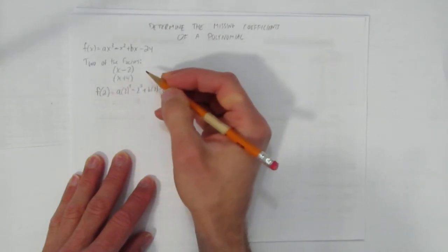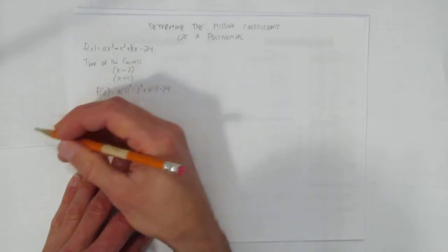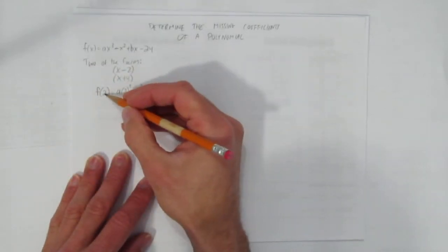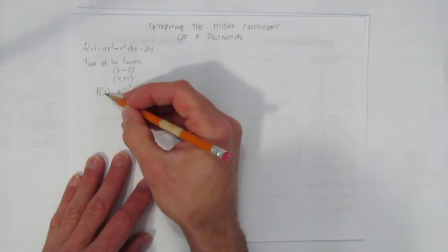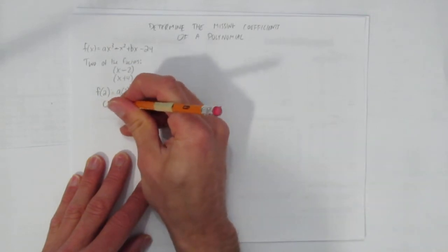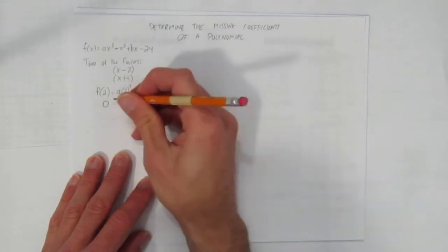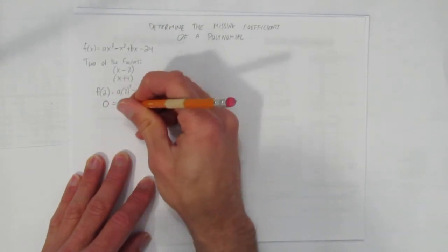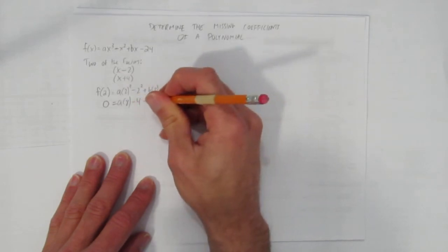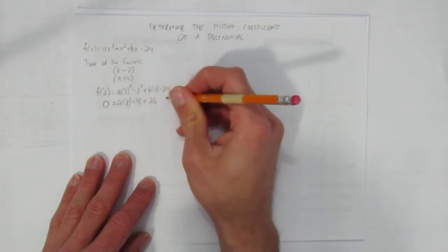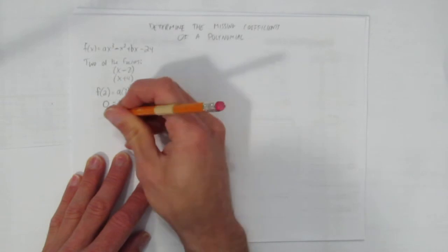The beauty of factor theorem, or remainder theorem, tells us that since we subbed in a zero of this corresponding factor, we know that when you sub in this zero, you get a y value of 0. And so now we can simplify our equation. We get a times 8 minus 4 plus 2b minus 24.